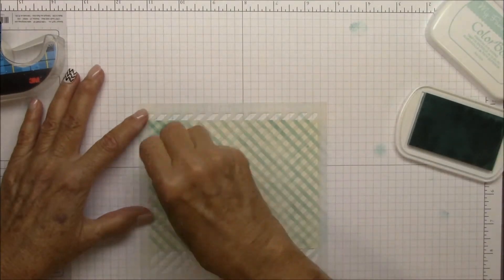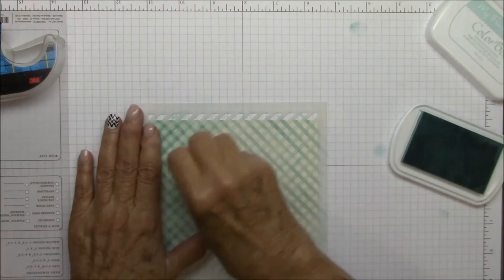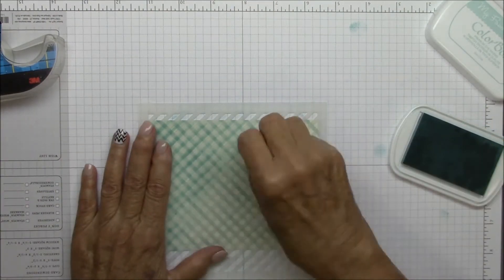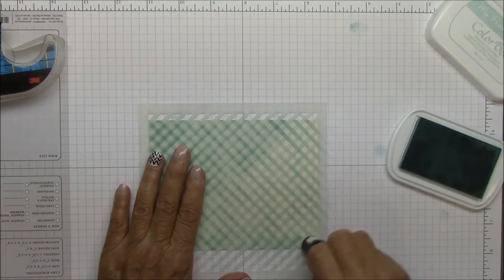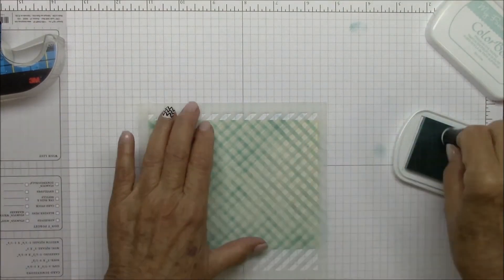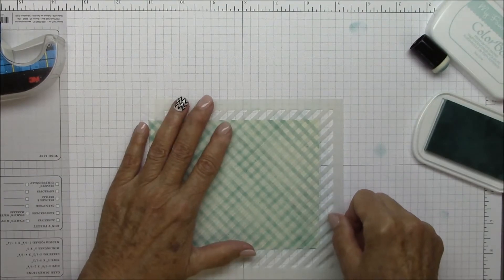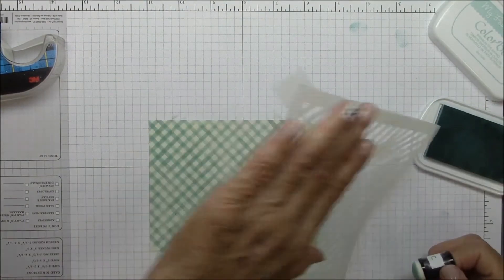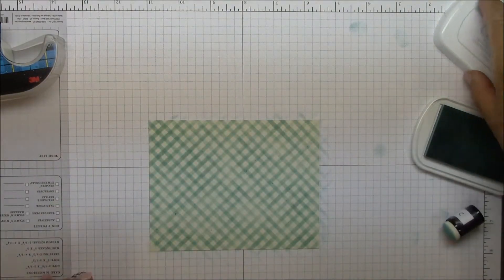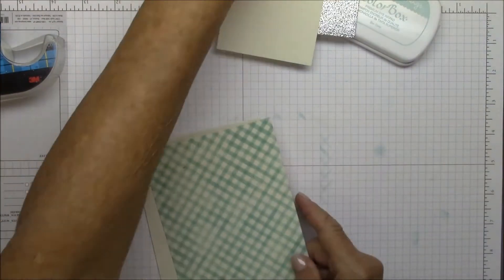Then I'm going to turn it over another 90 degrees and sponge in the other direction. Again, I love the variation that you get with doing this by hand. It's light in some places and darker in others and I just love that. Again, just finishing off that end. And there you have your pattern paper.